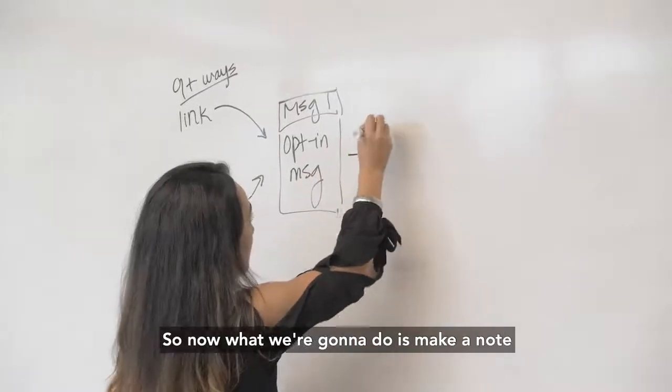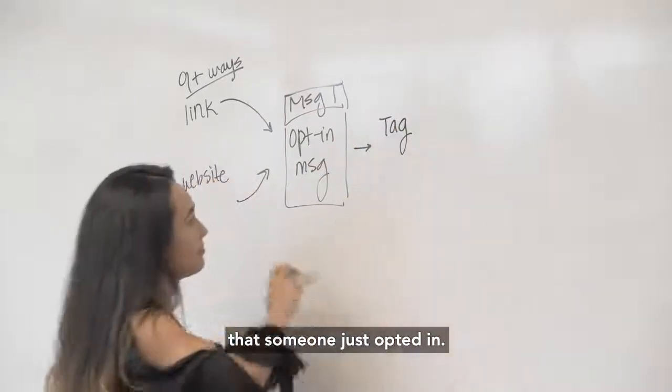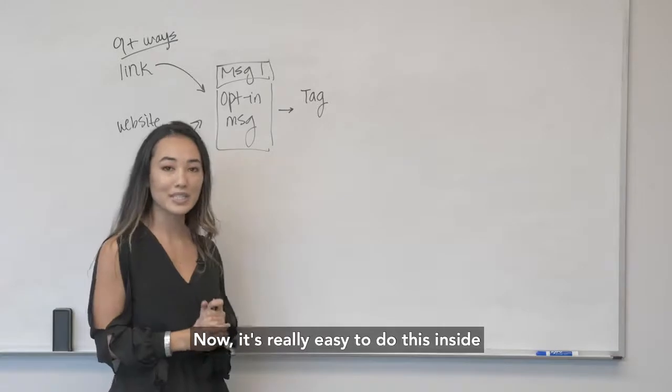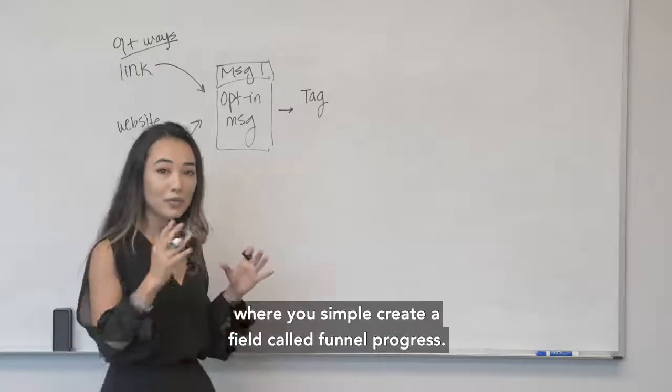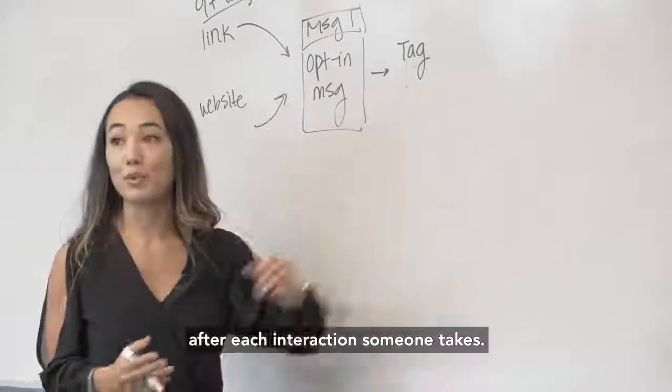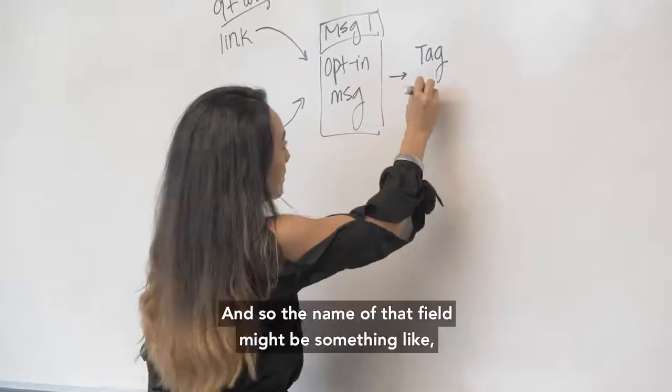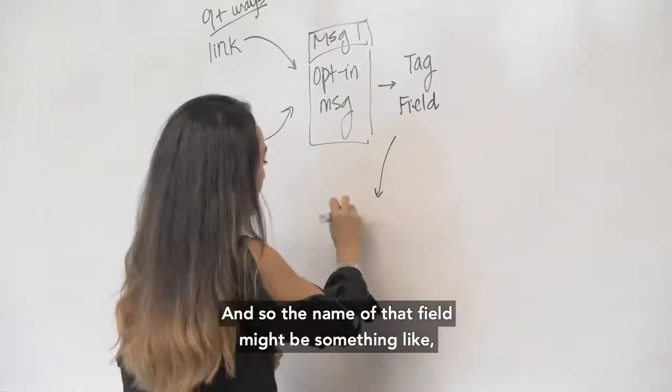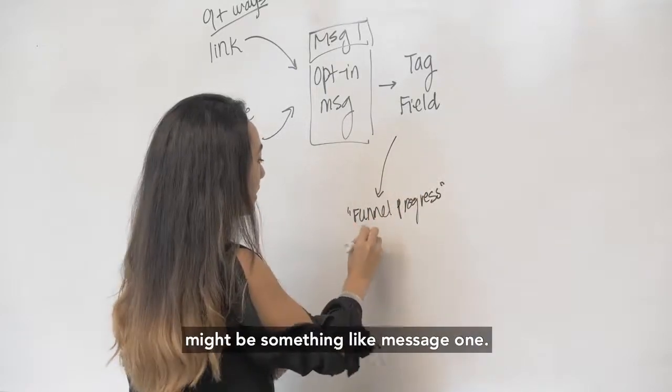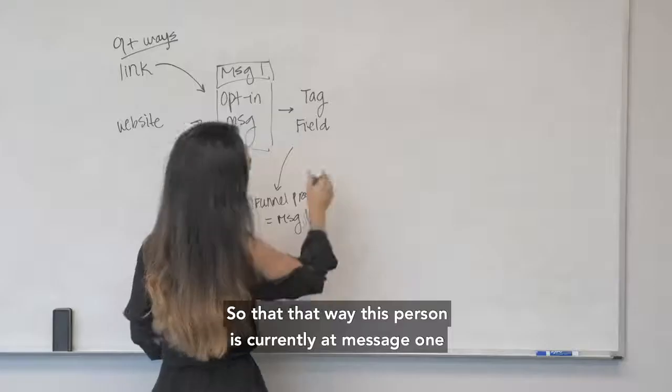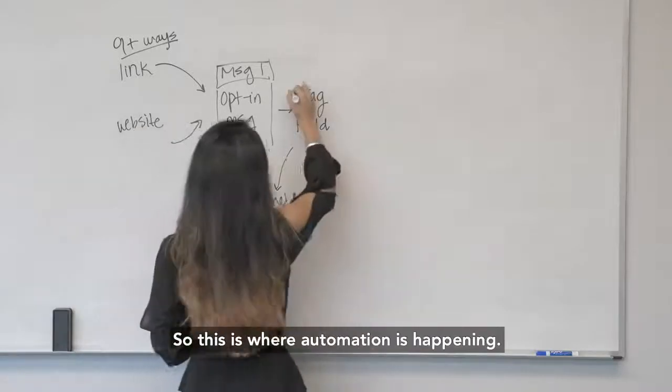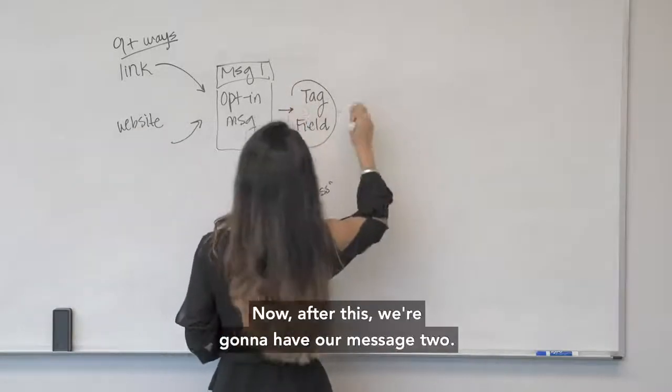We've got our opt-in message one, so now what we're going to do is make a note that someone just opted in. We also want to create a field that I typically call funnel progress. It's really easy to do this inside of a tool like Manychat where you simply create a field called funnel progress and you can update the value of that field after each interaction someone takes. The value of it after we create it might be something like message one, so that way I just know this person is currently at message one at any given point if I were to take a look at their profile. This is where automation is happening.